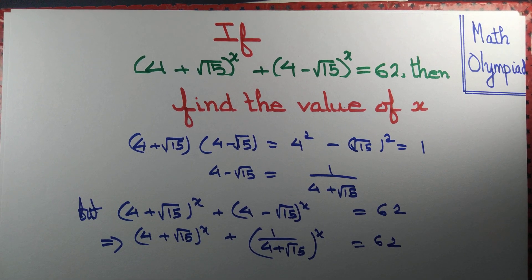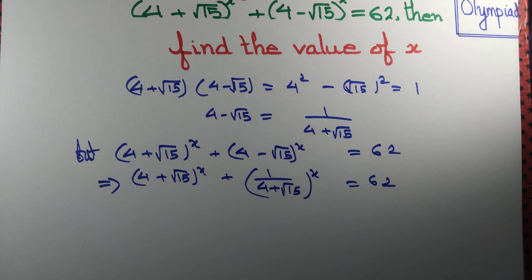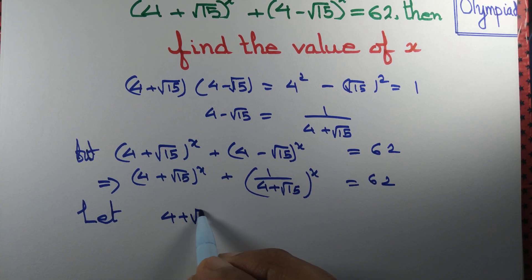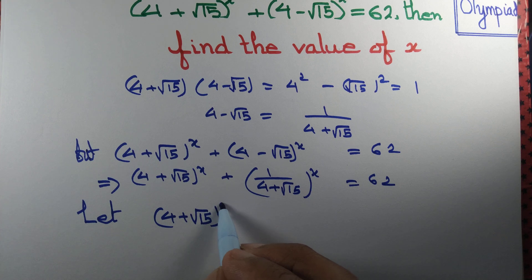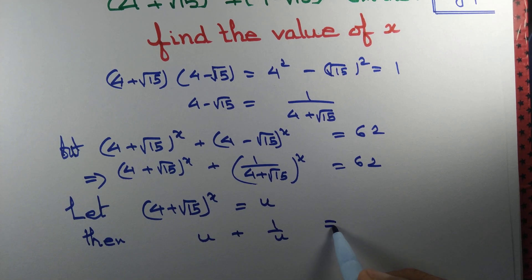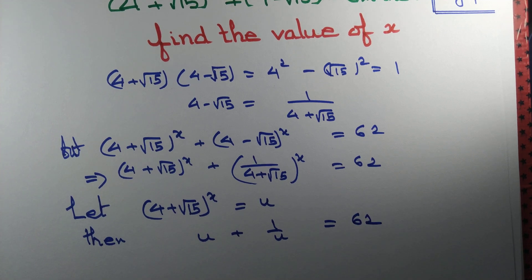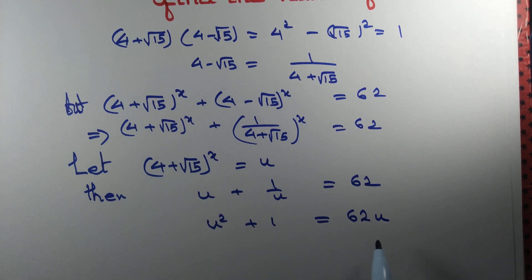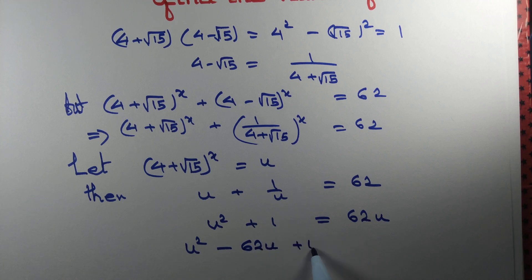Now can we solve for x? We can, if we recognize this as a quadratic equation. Let u = (4 + √15)^x. Then u + 1/u = 62. Multiplying through by u: u² + 1 = 62u, which gives u² − 62u + 1 = 0.